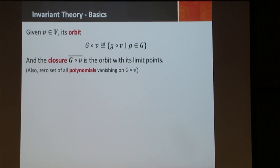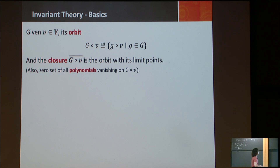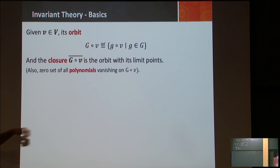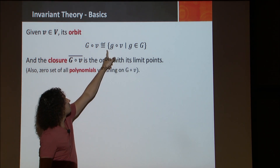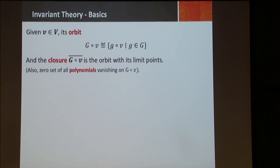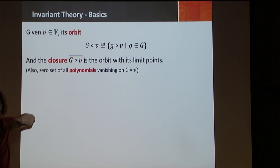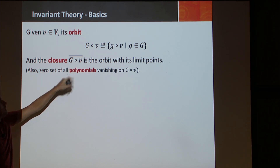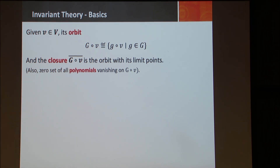Now let's talk about the geometric properties of these groups acting on vector spaces, because at some point we'll do optimization and we need some geometry. Given a point V, an important object is its orbit — simply the set of all elements G·V as G ranges over the group. This is all the elements reachable from V under the action of G.